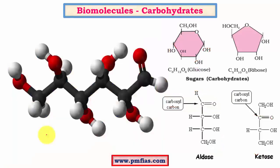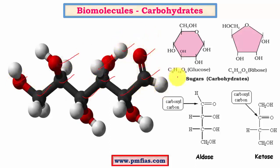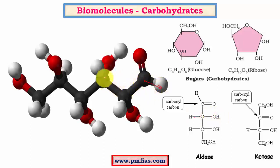The aldehyde group and the ketone group are present in more or less all carbohydrates. A general glucose molecule has six carbon atoms, all bonded to oxygen and hydrogen atoms — the red atoms are oxygen and the white ones are hydrogen. The general formula is C6H12O6: six carbon atoms, twelve hydrogen atoms, and six oxygen atoms. Glucose and ribose are examples of carbohydrates — aldose and ketose respectively.